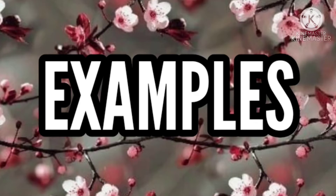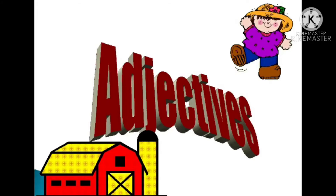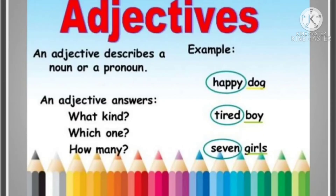Now let us go to our workbook examples. An adjective gives clarity to a sentence. 'Sneha is carrying a green bag' — what type of bag? Green bag. 'The project was a huge success' — how much success? Huge success. 'My friend Manju is a famous dancer.' And 'there were tall trees and lovely flowers in the park.'